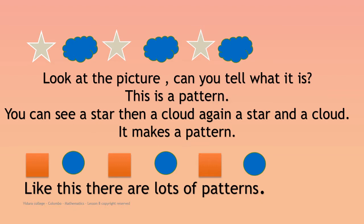Look here children. What can you see here? You can see stars and clouds are in a line. Are they just in a line? Can you see there is a different way of setting? Yes, they are in a pattern. First you can see a star, then you can see a cloud. What can you see next — is it a star or a cloud? Next there is a star, and again there is a cloud. So they are in a pattern.